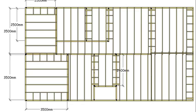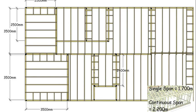Now let's have a look at our spans for our ceiling joists. Our single span that we're allowed to have is 1700, so none of our joists are spanning less than 1700 — we're not going to have any single spans in this house at all. The distance we're allowed to have for a continuous span is 2200, so even if this were continuous, that distance is greater than 2200. So we're going to have to have a hanger in virtually all of our rooms.